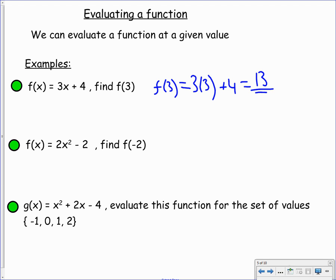The second one, we've got a function 2x squared minus 2. And we want to evaluate for negative 2. So f of negative 2 is the same as 2 times negative 2 squared, take away 2. Negative 2 squared is positive 4. So I've got 2 times positive 4, take away 2. 2 times 4 is 8, minus 2, which is of course 6. So the value of that function at negative 2 is 6.